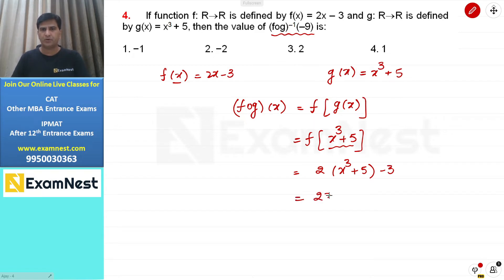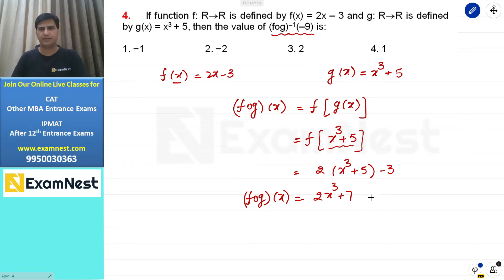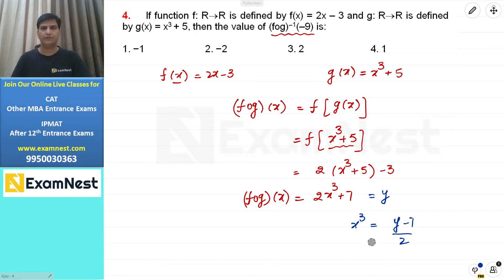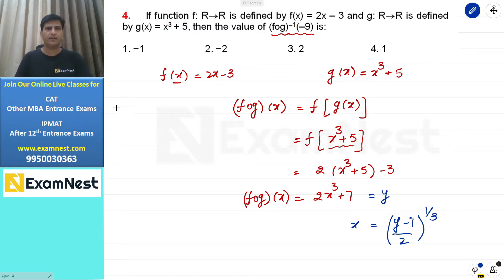f∘g(x) = 2(x³+5) - 3 = 2x³ + 10 - 3 = 2x³ + 7। Inverse function निकालने के लिए इसे y के equal करते हैं और x को y की terms में solve करते हैं। 2x³ = y - 7, x³ = (y-7)/2, x = ((y-7)/2)^(1/3)।